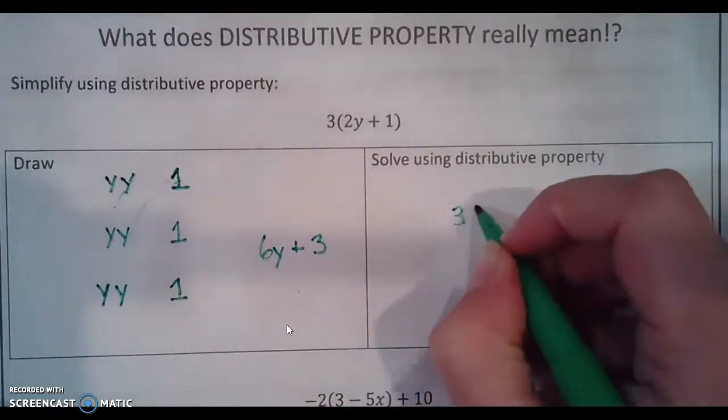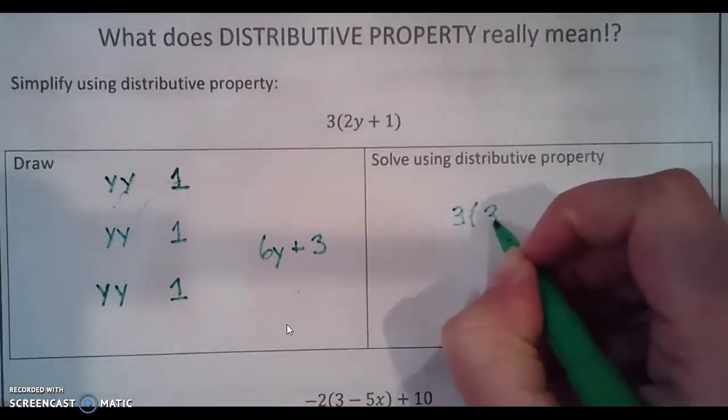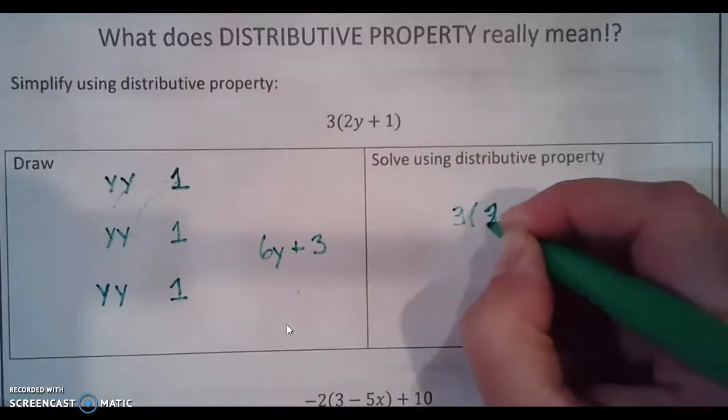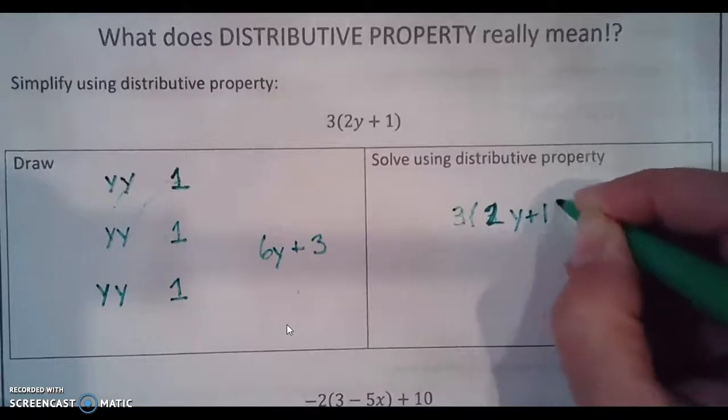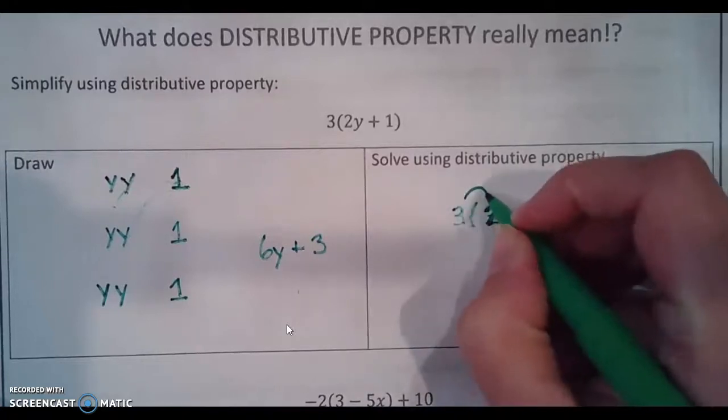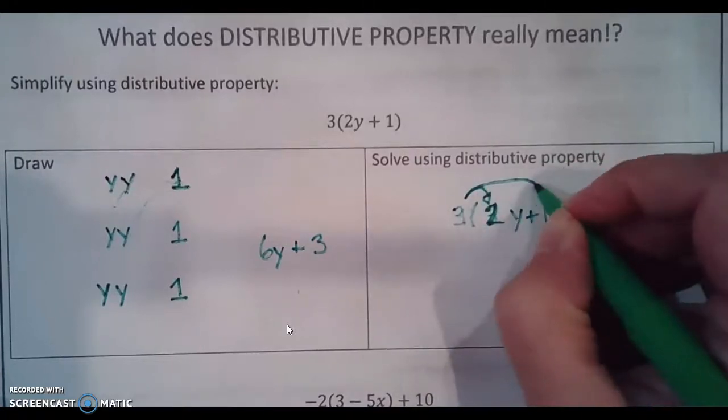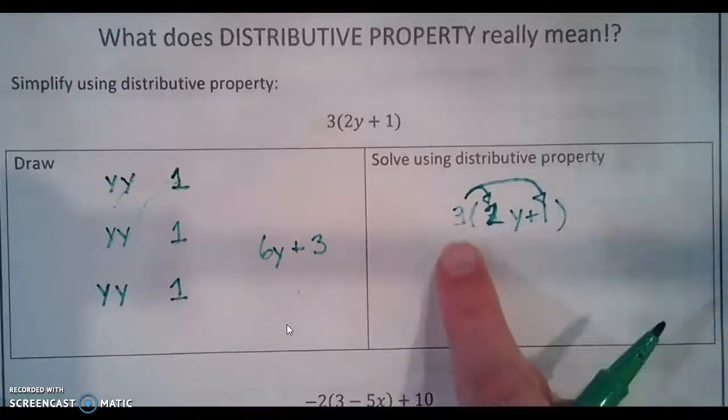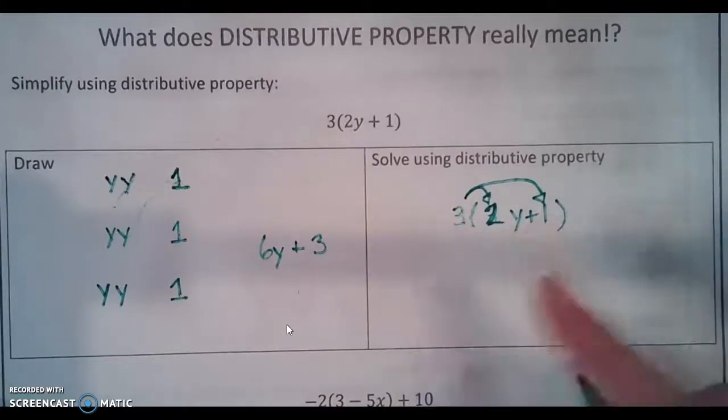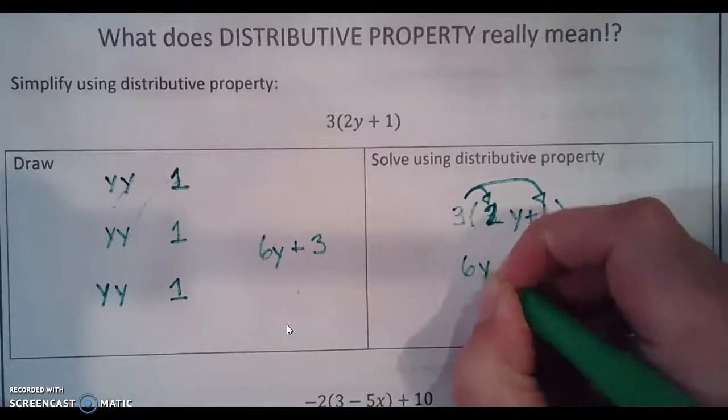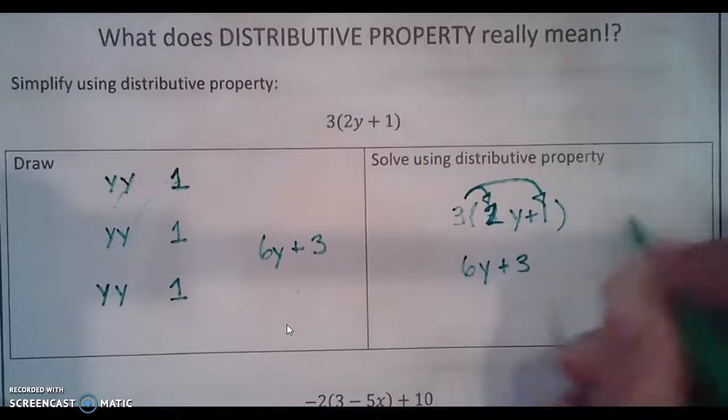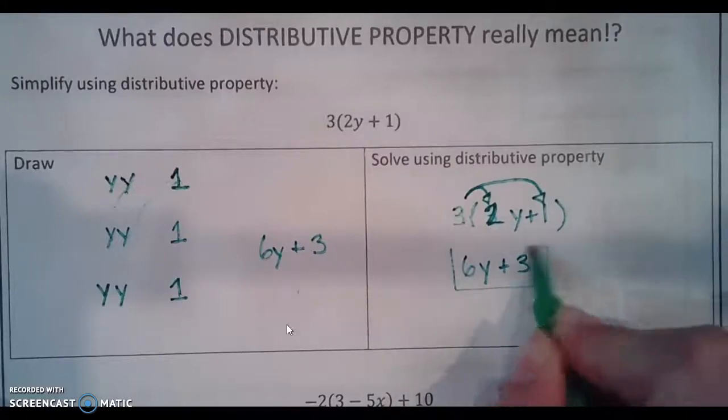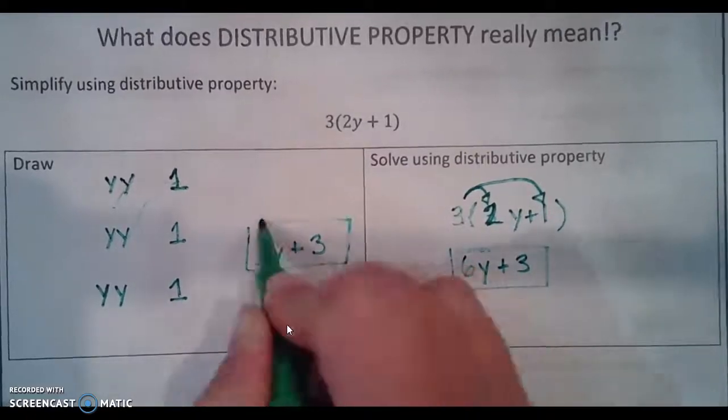If we actually solve this the way that we learn how to solve it in class we put 3 times 2y plus 1 and we draw our arrows. These arrows represent the distributive property. It represents multiplication. Three times 2y is 6y and three times one is 3. And voila we have the same answer.